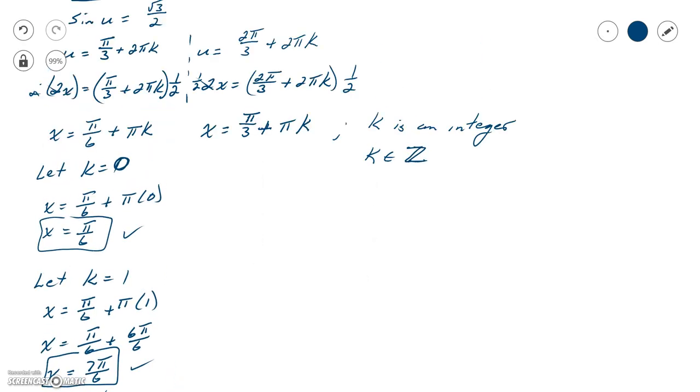All right, well, to find the remaining solutions, I need to do the same thing over here. We're going to let k equal 0, and I'm going to say x equals π over 3 plus π times 0, which is just going to be π over 3. That's between 0 and 2π, so I'll take that for one of my answers.